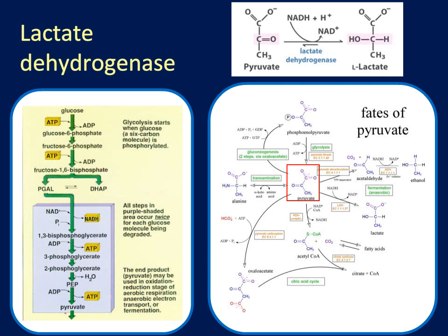Pyruvate is the product of glycolysis, as outlined in the figure on the left. Pyruvate from the glycolysis pathway is utilized in many, many different pathways, as outlined on the right.